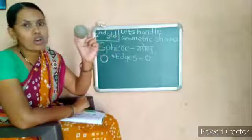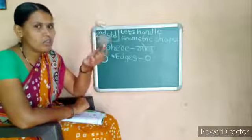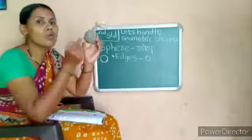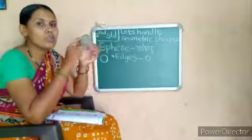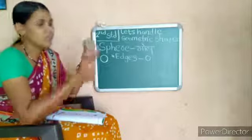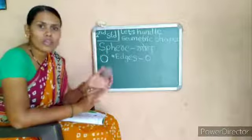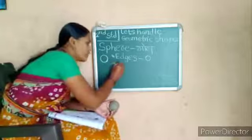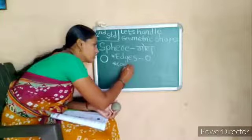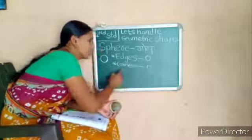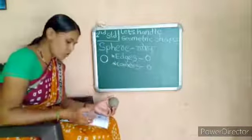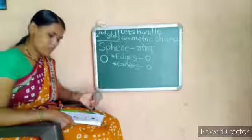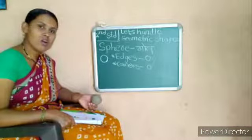Have you seen any corner to this shape, or this sphere shape? Hea sphere la kutha kone distat ka? No. The sphere shape has no any corners also. Sphere has no any corners. Corners are also zero. A sphere has no edges and no corners.